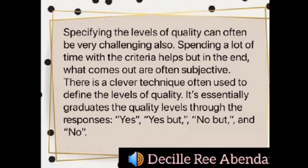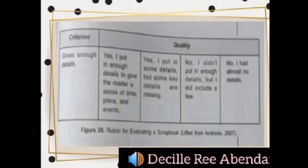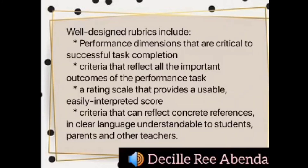Rubrics are scales that differentiate levels of student performance. They contain the criteria that must be met and the judgment process used to rate how well the student has performed. An exemplar is an example that delineates the desired characteristics of quality in ways students can understand — an important part of the assessment process. Well-designed rubrics include performance dimensions critical to successful task completion, criteria reflecting all important outcomes, a rating scale providing an easily interpreted score, and criteria in clear language understandable to students, parents, and other teachers.